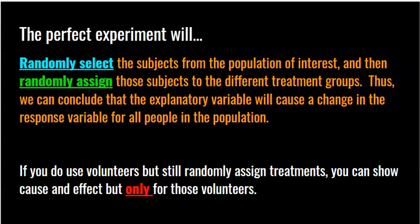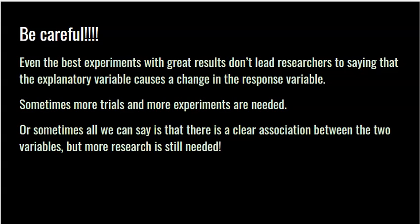You have to understand when you can infer, when you can use the phrase 'cause and effect,' and who you can infer your results to. Even the best experiments with great results make it hard for researchers to say that the explanatory variable causes a change in the response, because there's still a chance for confounding variables. Sometimes more trials and experiments are needed. If you want to show that X causes Y, maybe you need to do five or six experiments around the world with different groups of people. If not everything is absolutely perfect, maybe all you can conclude is that there's a strong association — you just can't use the word causation.